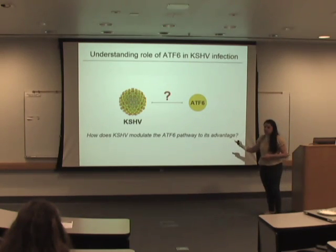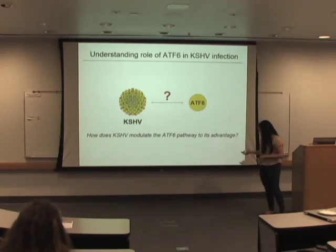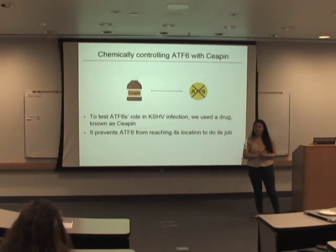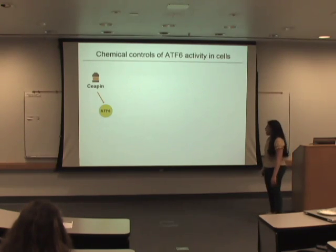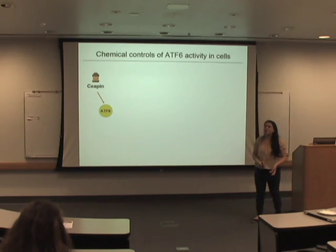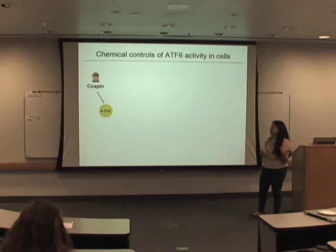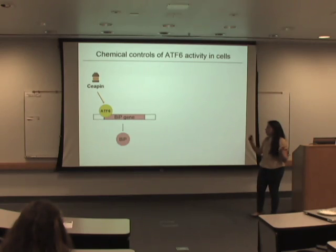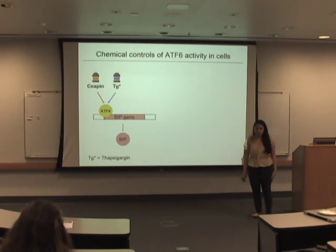To understand this interaction, we need to find a way to remove ATF6 from the equation and compare it to when ATF6 is present. That is why we're going to use a drug known as Ceapin. Ceapin basically kills ATF6 function — it prevents ATF6 from reaching its location and doing its job. Our first goal was to make sure our drug works, because that's essential for running an accurate experiment. Since there's no effective way to directly visualize ATF6, we're going to look at one of its downstream helpers — a protein called BIP, which helps alleviate cell stress. We'll compare cells treated with Ceapin versus cells treated with thapsigargin, also known as TG.